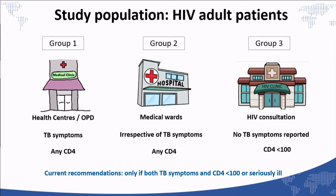Group two were patients hospitalized in medical wards, irrespective of TB symptoms and irrespective of their CD4 count. Group three were patients who were not self-reporting TB symptoms — whether newly diagnosed with HIV or on follow-up for an HIV consultation — but who were very immunocompromised with CD4 less than 100. These three groups included patients for whom LAM is not currently recommended.